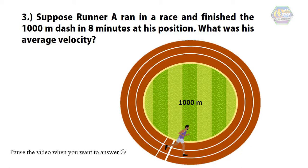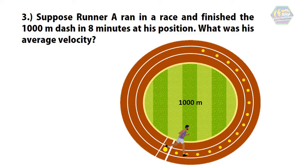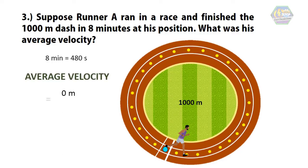Let's check the answer. Runner A's starting point and finish line were the same — he ran a track and ended at the same point where he started. Therefore, his displacement is 0 meters. The average velocity of Runner A is 0 meters divided by 8 minutes, which equals 0 meters per second.